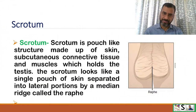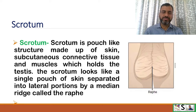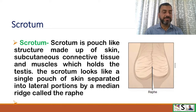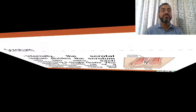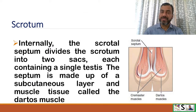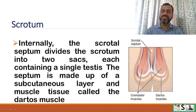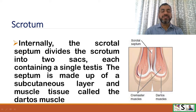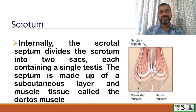First is the scrotum. The scrotum is a pouch-like structure made up of skin, subcutaneous tissue and muscles which holds the testes. The scrotum looks like a single pouch of skin but it is separated into lateral portions by a median ridge known as the raphe. Internally, the scrotal septum divides the scrotum into two sacs, each containing a single testis. The septum is made up of subcutaneous layer and muscle.